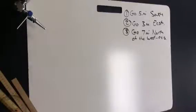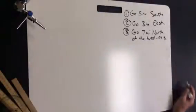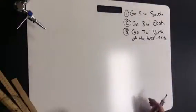Okay, here are the instructions. You're going to go five miles south, then you're going to go three miles east, and then seven miles north of the west axis.